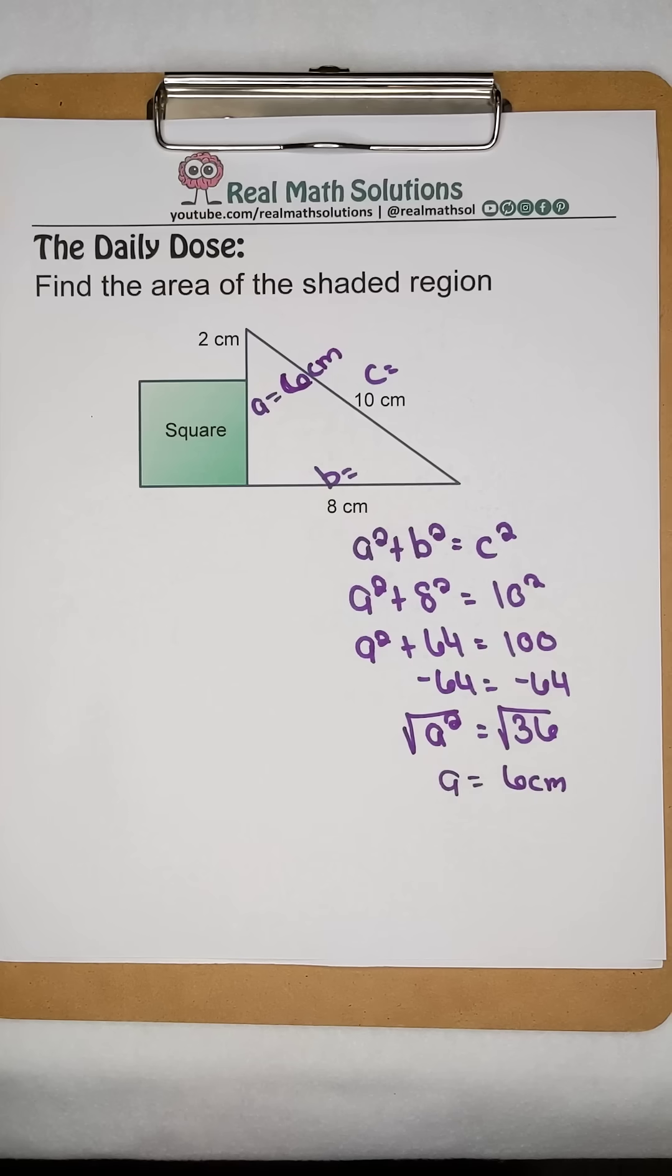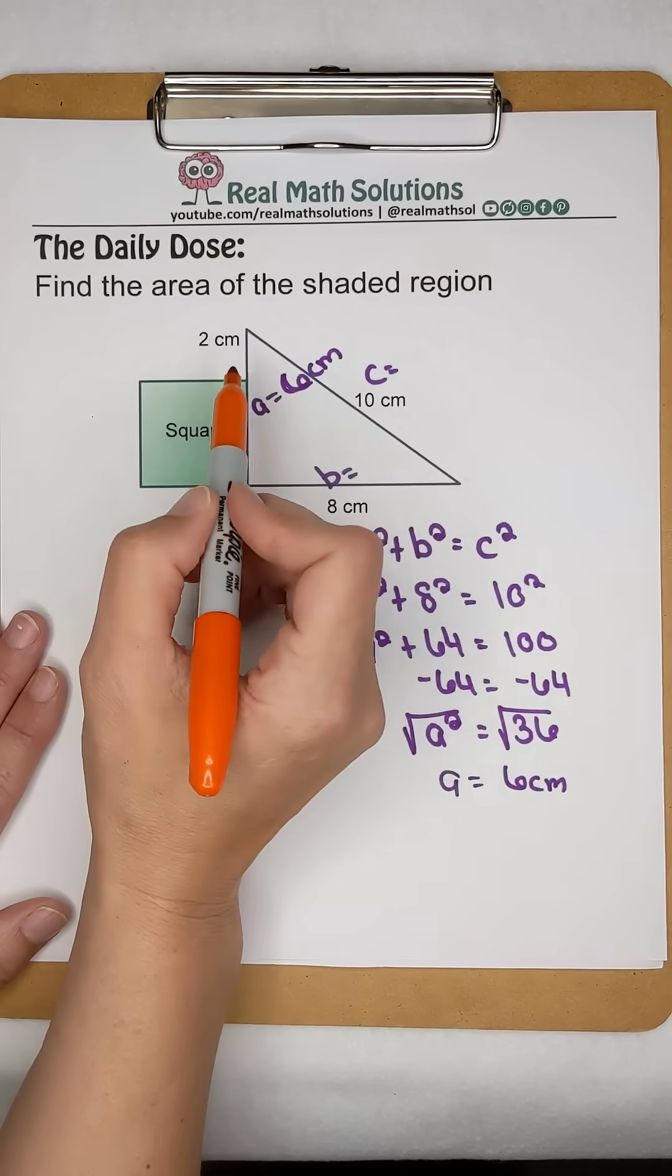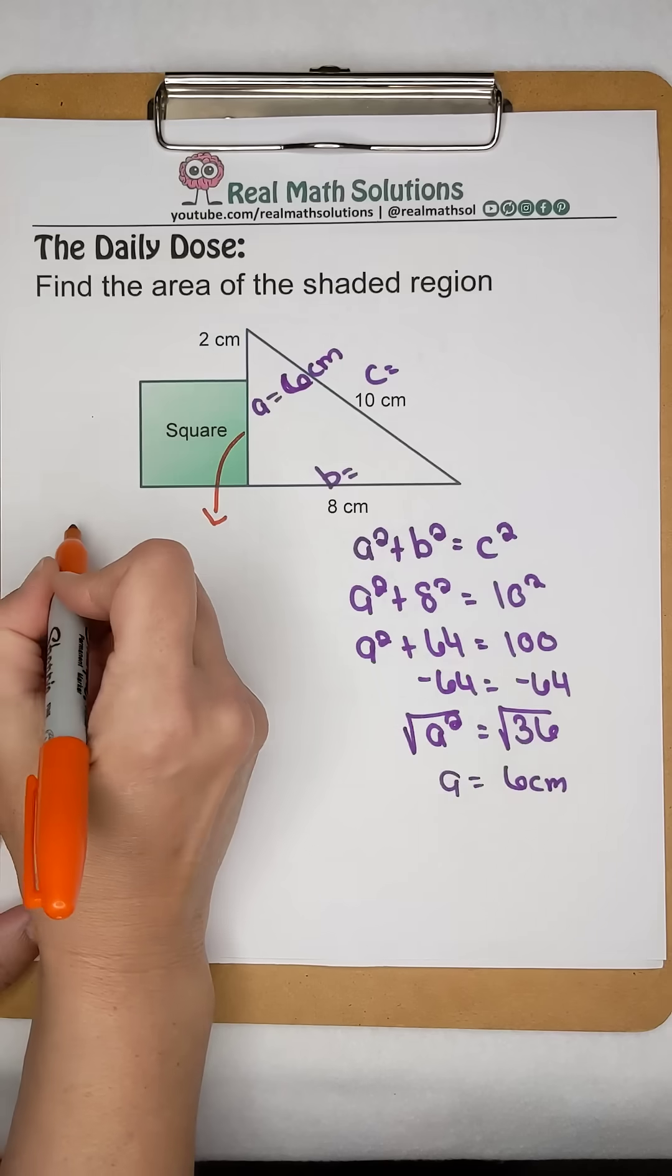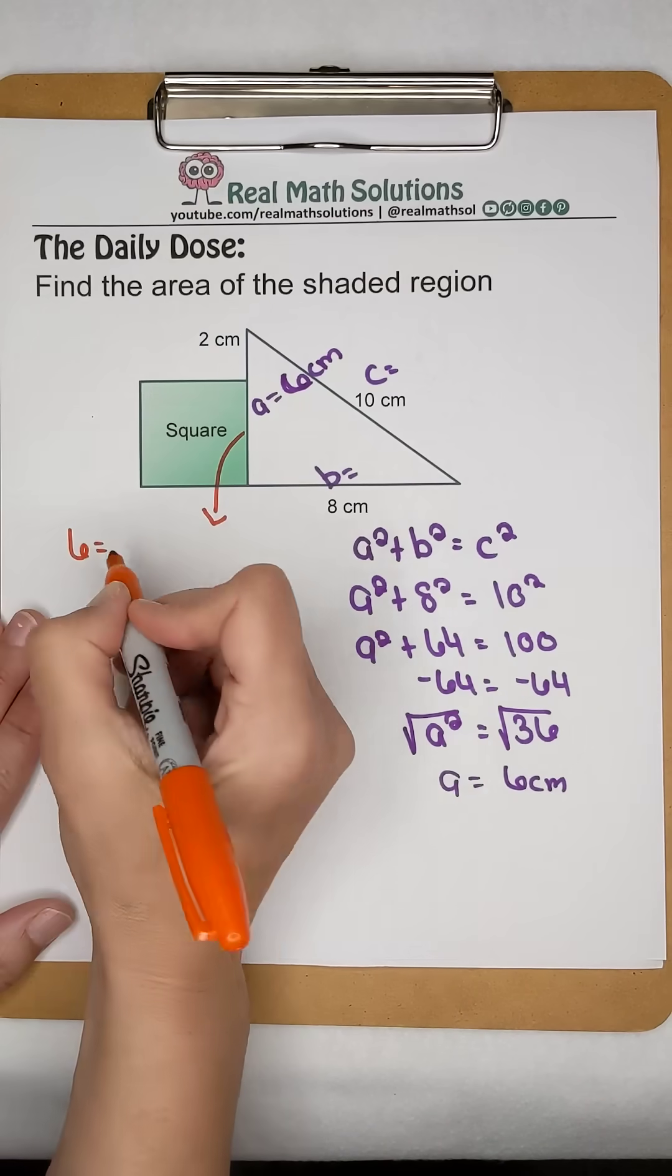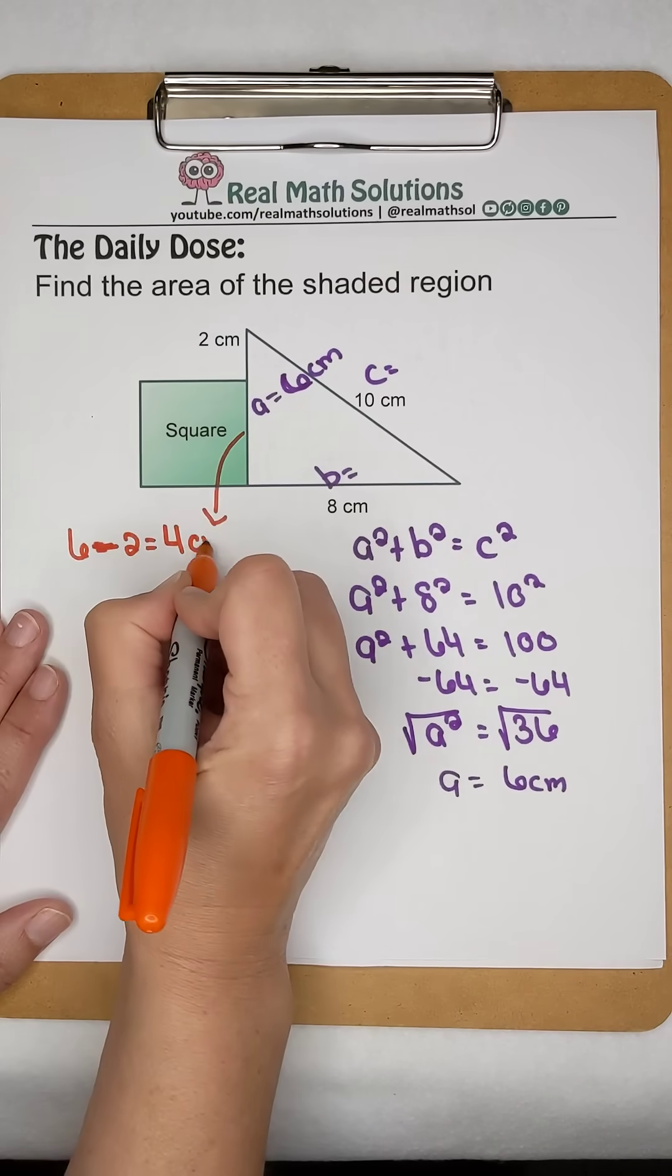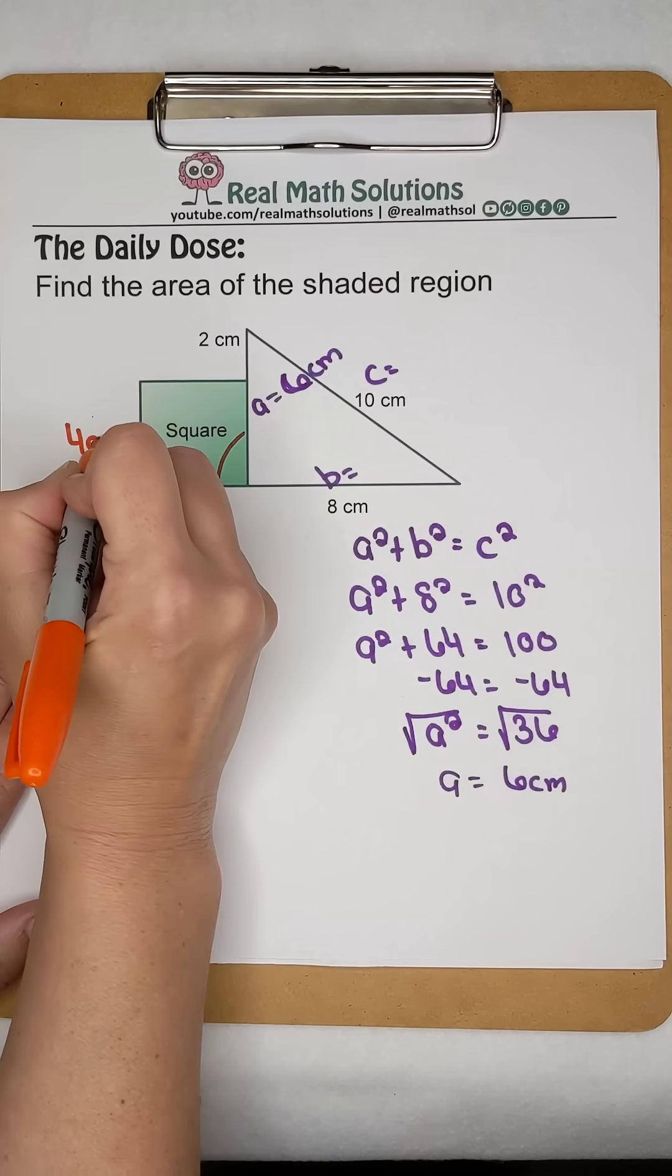But that's not enough information yet to find the area of a square, because they told us this little piece up here is worth 2. So we need to find what this piece of the square is worth. We know the total edge is 6, we know the part up top is 2, so that leaves us with 4 centimeters to be the edge of the square.